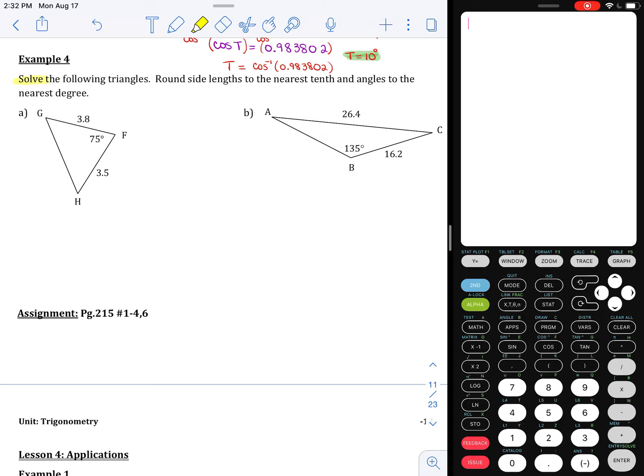Example four. We are asked to solve the following triangles. As usual, we'll round the sides to one decimal place, the nearest tenth, and angles to the nearest whole number or the nearest degree.